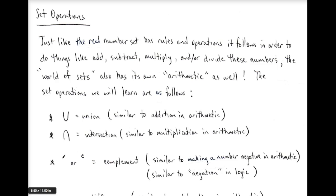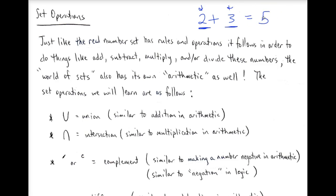The first operation we want to talk about is the union operation. Just like addition, subtraction, multiplication, and division are binary operations — meaning we need two things to actually do the operation — so for instance if we have two plus three, it's a binary operation because we need something to the left and something to the right for it to make sense. Our union operator is acting like addition within set theory. The keyword we use to describe it is the word 'or.' So if we have A union B, that means as long as an element is in set A or in set B, we add it to the new set A union B.